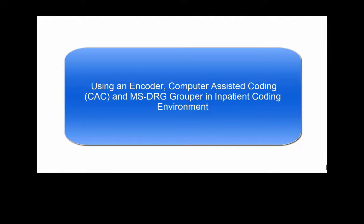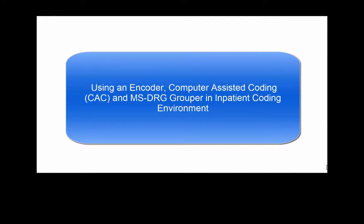Today's podcast is going to focus on a few of the applications that you would see if you were coding in an inpatient environment. The encoder, computer assisted coding, and the grouper, which is inside the encoder usually, are all used together when a coder is coding a chart. I can't show you these applications because I don't have access to them, so I've tried to explain what each application would do. If you're lucky enough to get into a practicum environment where you can actually see the software, the words will not be foreign to you.